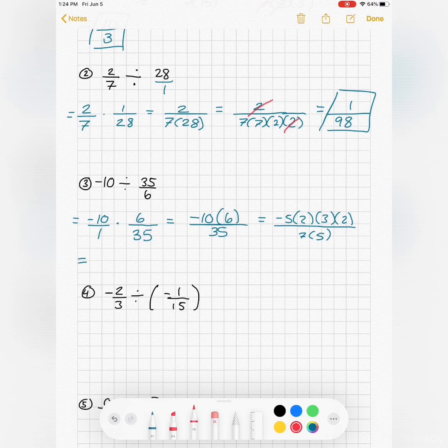Break these up, cancel any common factors. So I've got negative 2 times 3 times 2 over 7, so negative 6 times 2 is negative 12 over 7.